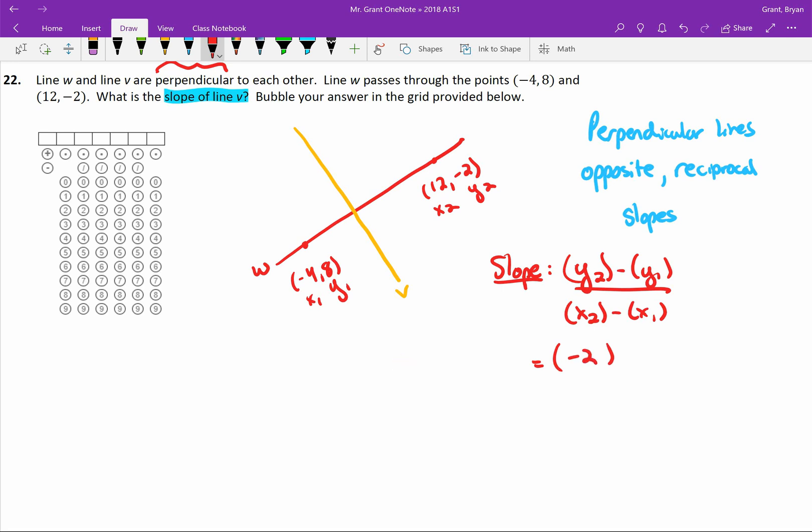Y2 is -2. Y1 is 8 over X2, which is 12, minus X1, which is -4. And then we simplify. -2 minus 8 is -10. 12 minus -4. Let's turn that into a positive. 12 plus 4 is 16.